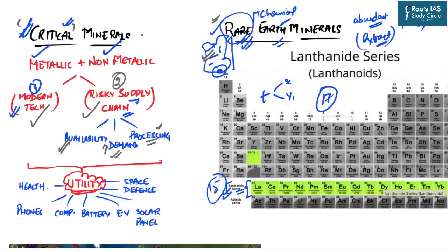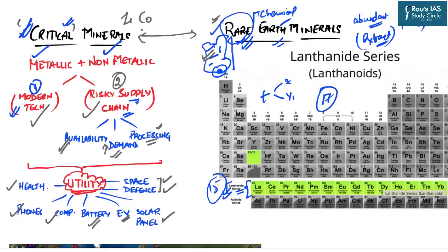The utility of critical and rare earth minerals spans multidimensional areas. They are used in health — for example, equipment that detects cancer and in arthritis treatment. They are used to build electronic equipment such as phones and computers, in batteries and electric vehicles, in renewable energy sources like manufacturing solar panels, and in ultra-high-tech sectors such as defense and space. Elements like lithium and cobalt are also critical minerals for several countries.